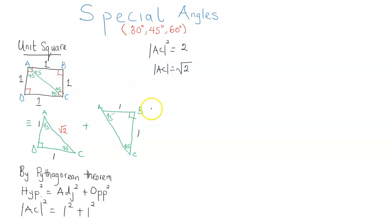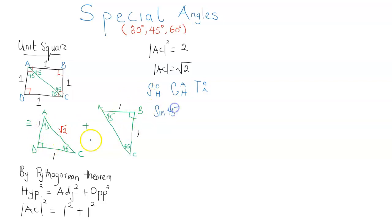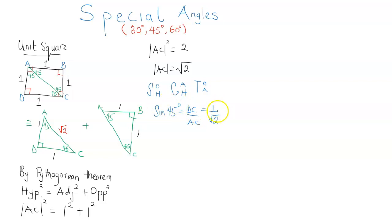In the video I made on trigonometrical functions — if you haven't seen it, click on the link at the top right-hand corner — you'll realize that the sine of an angle is the ratio of the opposite to the hypotenuse, the cosine is the ratio of the adjacent to the hypotenuse, and the tangent is the ratio of the opposite to the adjacent. Focusing on triangle ADC, the sine of 45 degrees — focusing on angle A — is the ratio of the opposite to the hypotenuse. DC is the opposite and AC is the hypotenuse. This gives one over the square root of two. So sine 45 degrees equals one over root two.